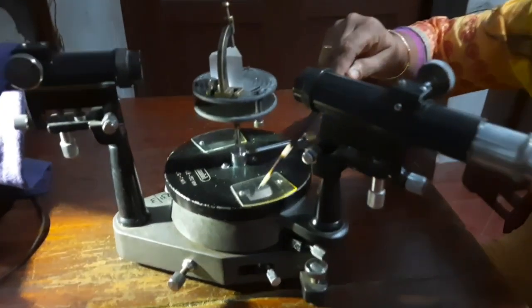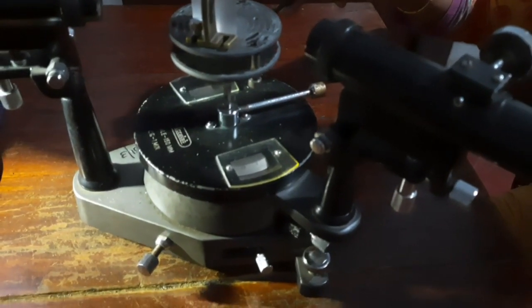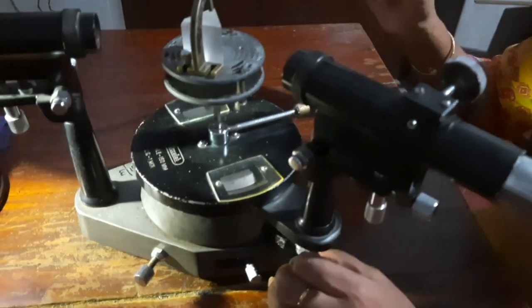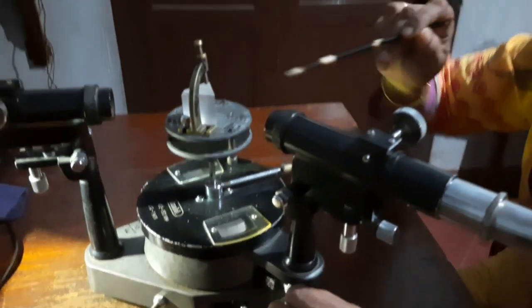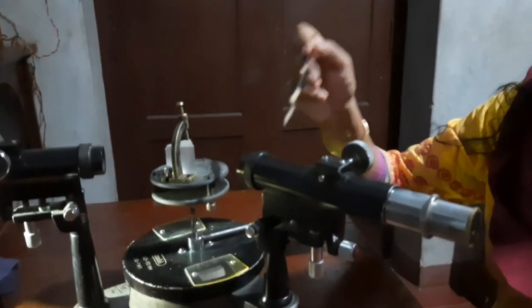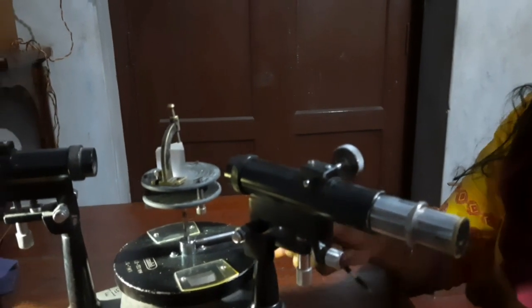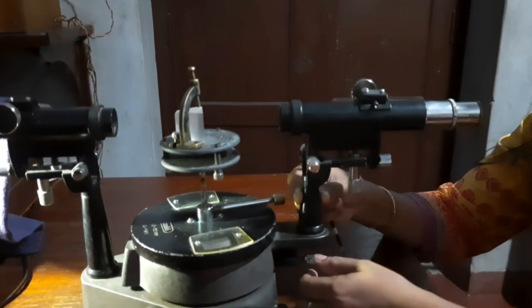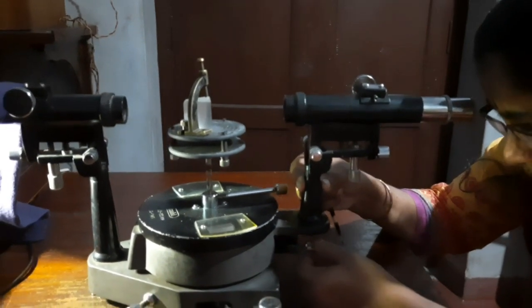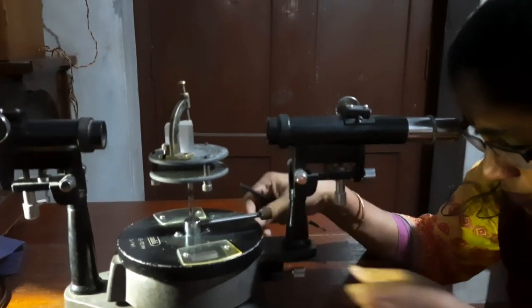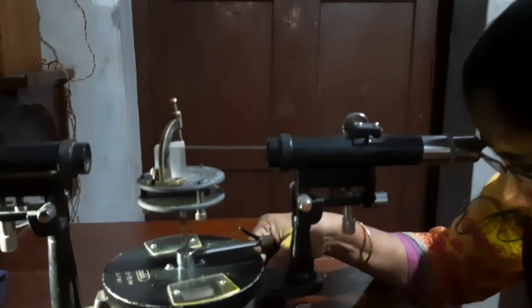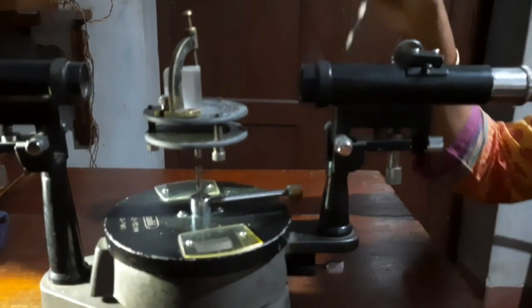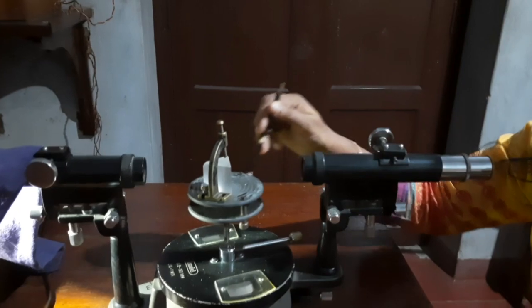Now take your Vernier 1 reading and your Vernier 2 reading. Now you want to know the direct reading also so that you can calculate this minimum deviation angle. For that, release your telescope, put it in direct position, clamp it with main screw, use your fine screw for fine adjustment.